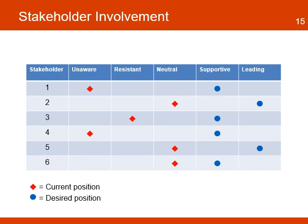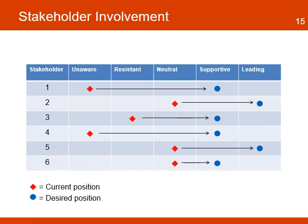Another tool used during stakeholder analysis is to identify the current and desired position of each key stakeholder. This chart places key stakeholders in the first column and identifies their level of involvement using five categories: Unaware — the stakeholder doesn't know about the project; Resistant — the stakeholder is initially perceived as resistant to the idea of the project; Neutral — the stakeholder has been informed but holds a neutral position; Supportive — the stakeholder approves the idea of the project; and Leading — the stakeholder is taking a lead role to support the project. The team identifies the current position of each stakeholder marked with a red diamond, and then identifies the desired level of involvement marked with a blue circle. The organization and project team use this information to develop strategies — such as communication, partnerships, and negotiation — to help stakeholders move across this chart.